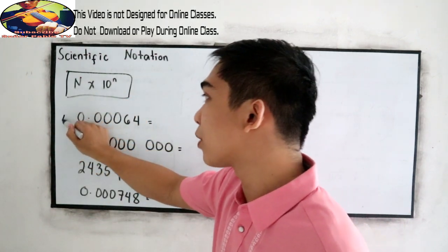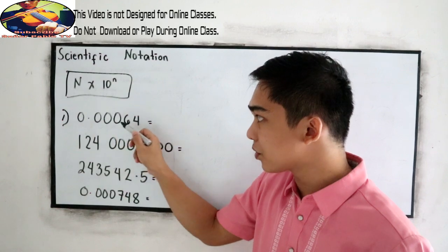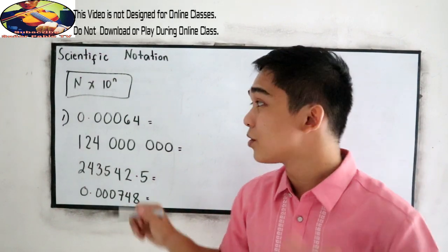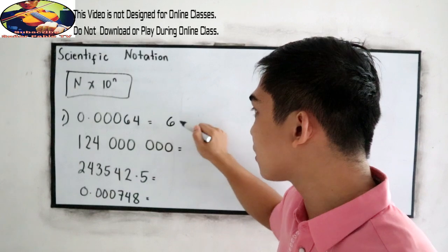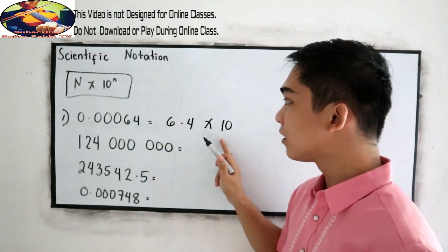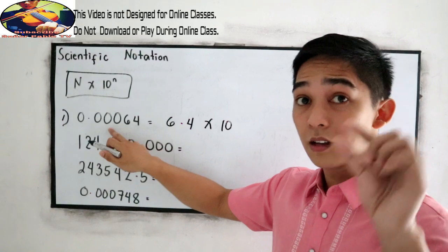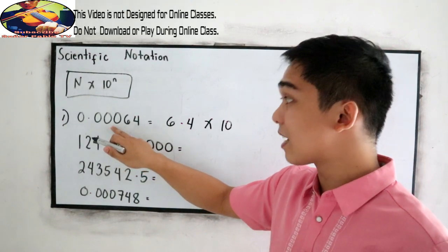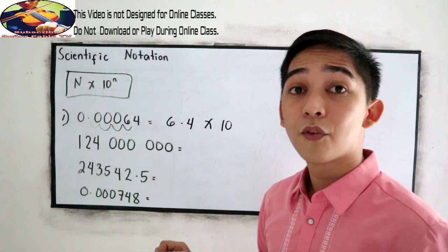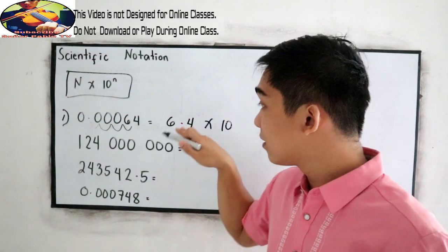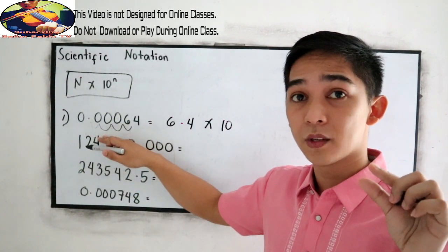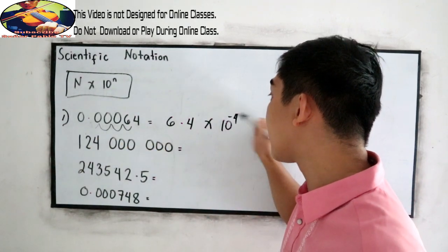Example 1: 0.00064. We know that it has a small value. So we can write this as 6.4 times 10. We move our decimal point 1, 2, 3, 4 — four units to the right. But since this is a small number, instead of writing positive 4, we write negative 4. So it becomes 6.4 times 10 raised to negative 4.